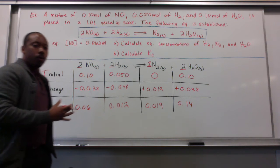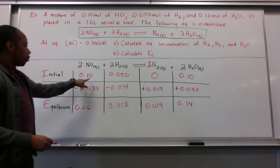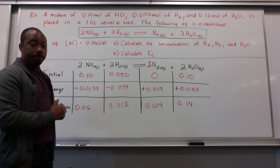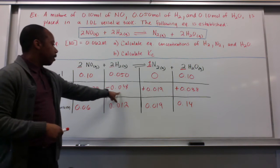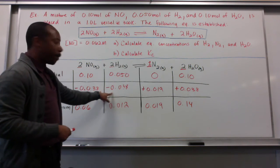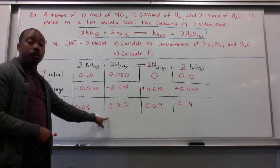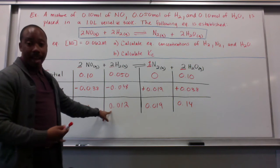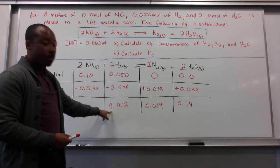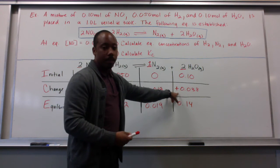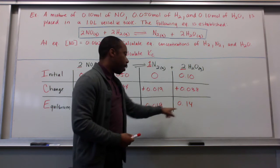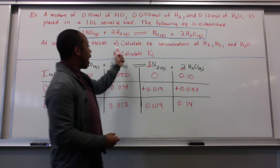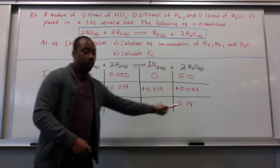Now, what this tells us is that initially, we started with these concentrations of my substances here. They changed by these amounts. These decreased by 0.038, giving us these concentrations at equilibrium. So, when this reaction is at equilibrium, these are the concentrations of my reactants that are there. For my products, they increased by these amounts. And these are the concentrations of my products at equilibrium. That is the answer to A, these four boxes there.